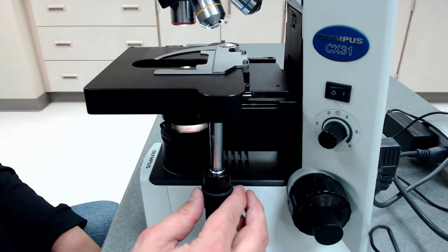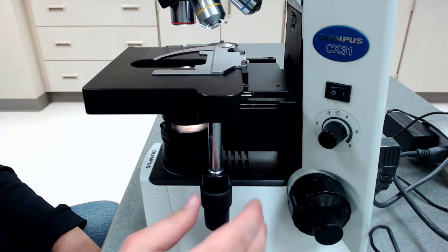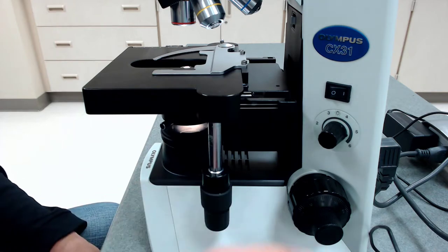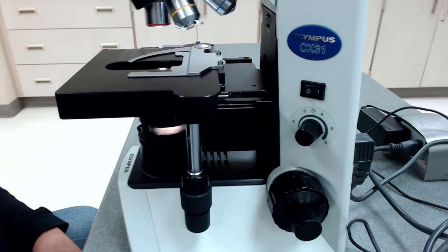So this is how you can control the stage forward and backward, side to side. But the most important knobs on here would actually be down here. Let me turn this a little bit. So you've got, this looks like one knob, but it's actually two on this microscope.